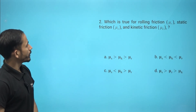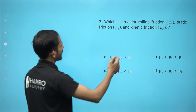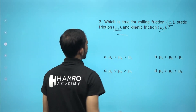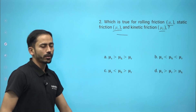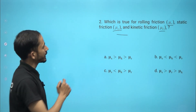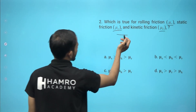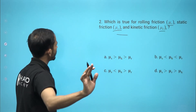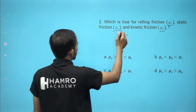Next question: which is true for rolling friction, static friction, and kinetic friction? Let's look at the coefficients and their relation. We need to check which one is largest. Look at limiting friction — which is the largest?